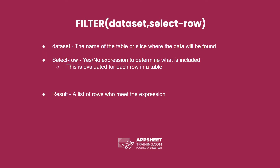The filter expression has two parameters. The first is the data set, which is the name of the table or slice where the data is found. The next is the select row. This is an expression that evaluates to yes or no and determines what is included. This is evaluated for each row in the table or slice, and the result is a list of rows that meet the expression.